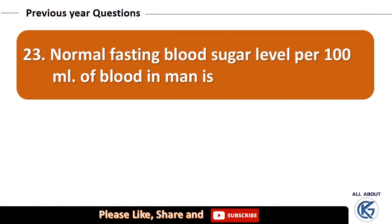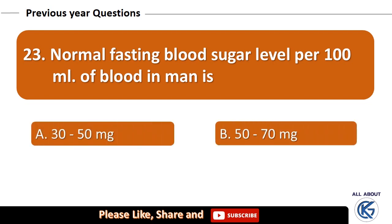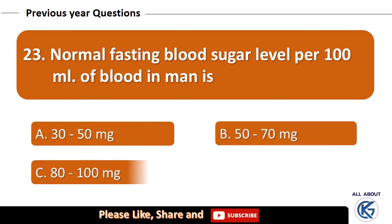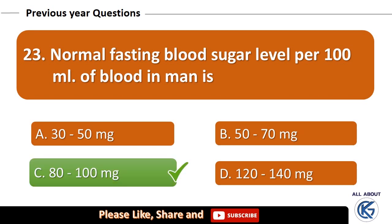Normal fasting blood sugar level per 100 ml of blood in man is: 30–50 mg, 50–70 mg, 80–100 mg, or 120–140 mg? The right answer is 80–100 mg.